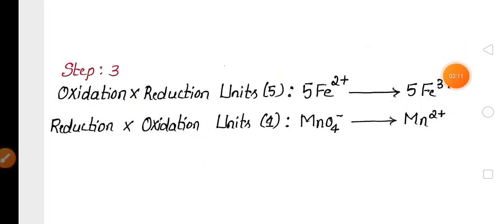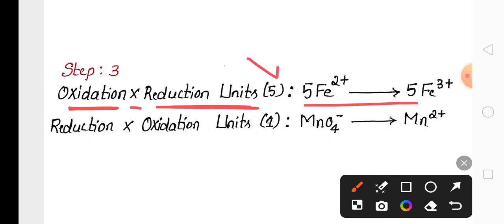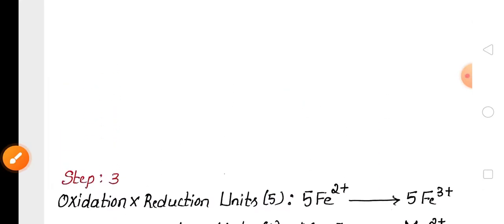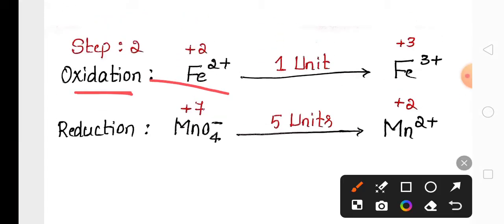In the next step, we multiply the oxidation reaction by the reduction unit, which is 5, and we multiply the reduction reaction by the oxidation unit, which is 1. The oxidation reaction is multiplied by the reduction unit and the reduction reaction is multiplied by the oxidation unit.